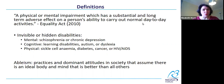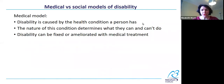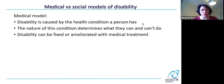Now I'm going to talk about models of disability. The medical model is probably the one you're most familiar with. In the medical model, a disability is caused by the health condition a person has, and it's the nature of this condition that determines what they can and cannot do. Depending on the disability, it might be able to be fixed or ameliorated with medical treatment.